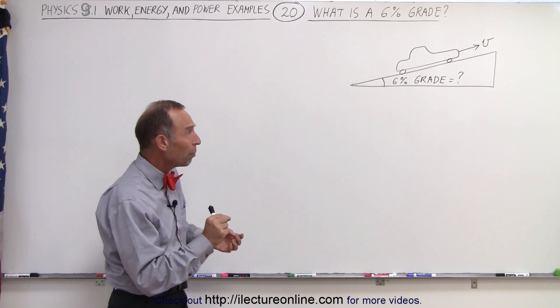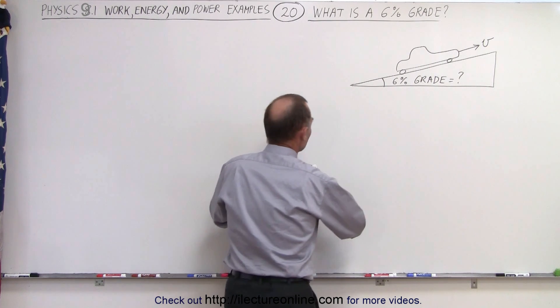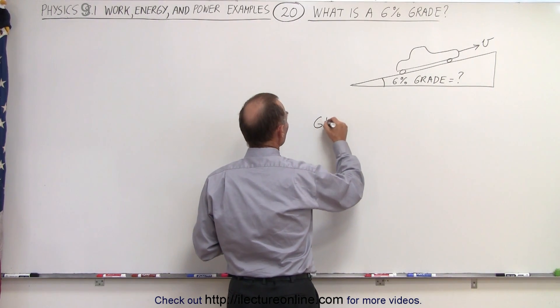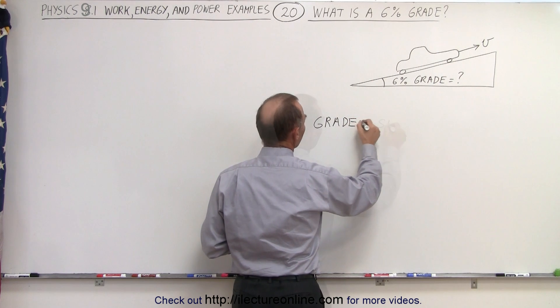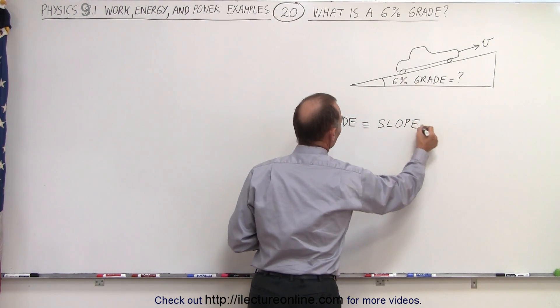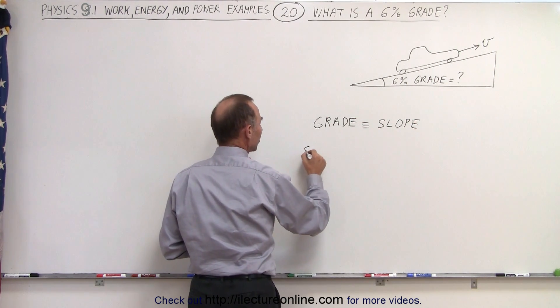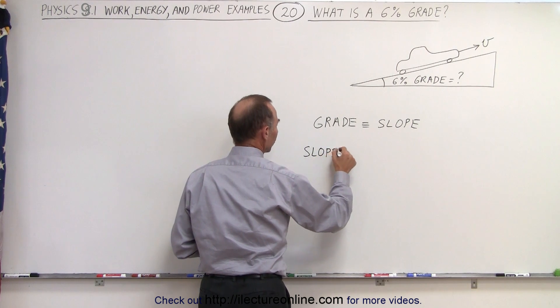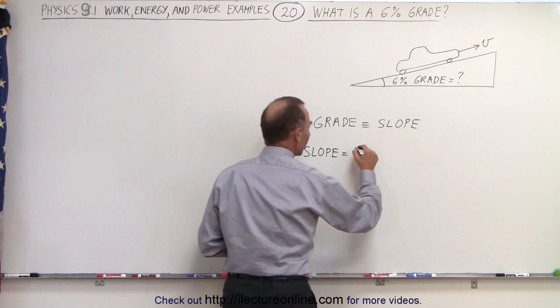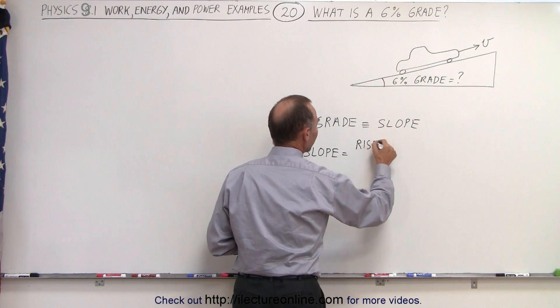But what exactly do we mean by a slope on the road which represents 6% grade? I did use the word slope because it turns out that the word grade is essentially synonymous with the word slope. Now let's explore the concept of slope. By definition, in algebra we've learned that the slope is equal to the ratio of the rise divided by the run.